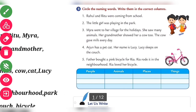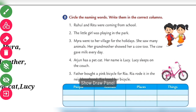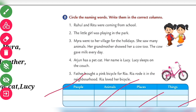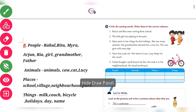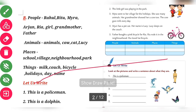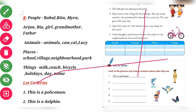On the next page, circle the naming words and write them in the correct columns. There are four columns: name, person, place, and thing. Sentence one: Rahul and Ritu were coming from school. Rahul and Ritu are names of persons — write them in the name column. School is a place — write it in the place column. Sentence two: the little girl was playing in the park — write girl in person, park in place.